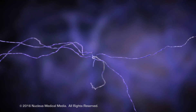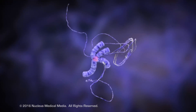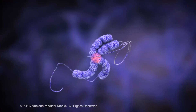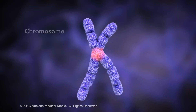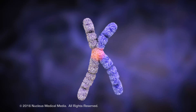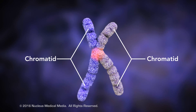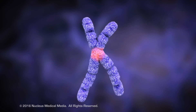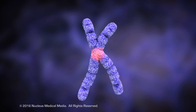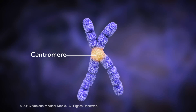At the beginning of cell division, DNA condenses tightly into an X-shaped structure, known as a chromosome. Each side of an X-shaped chromosome is a genetically identical sister chromatid, forming a sideways V-shape. In the middle, a structure called a centromere joins the sister chromatids together.